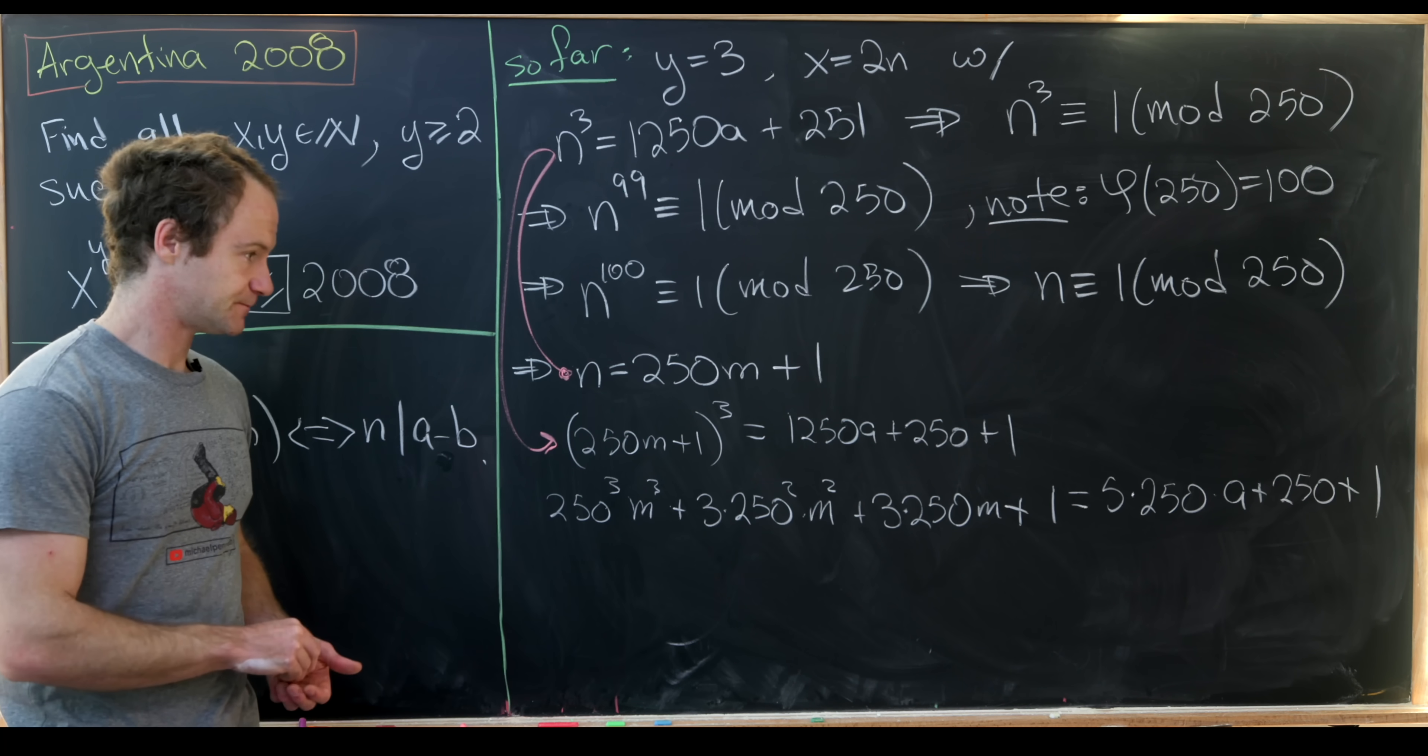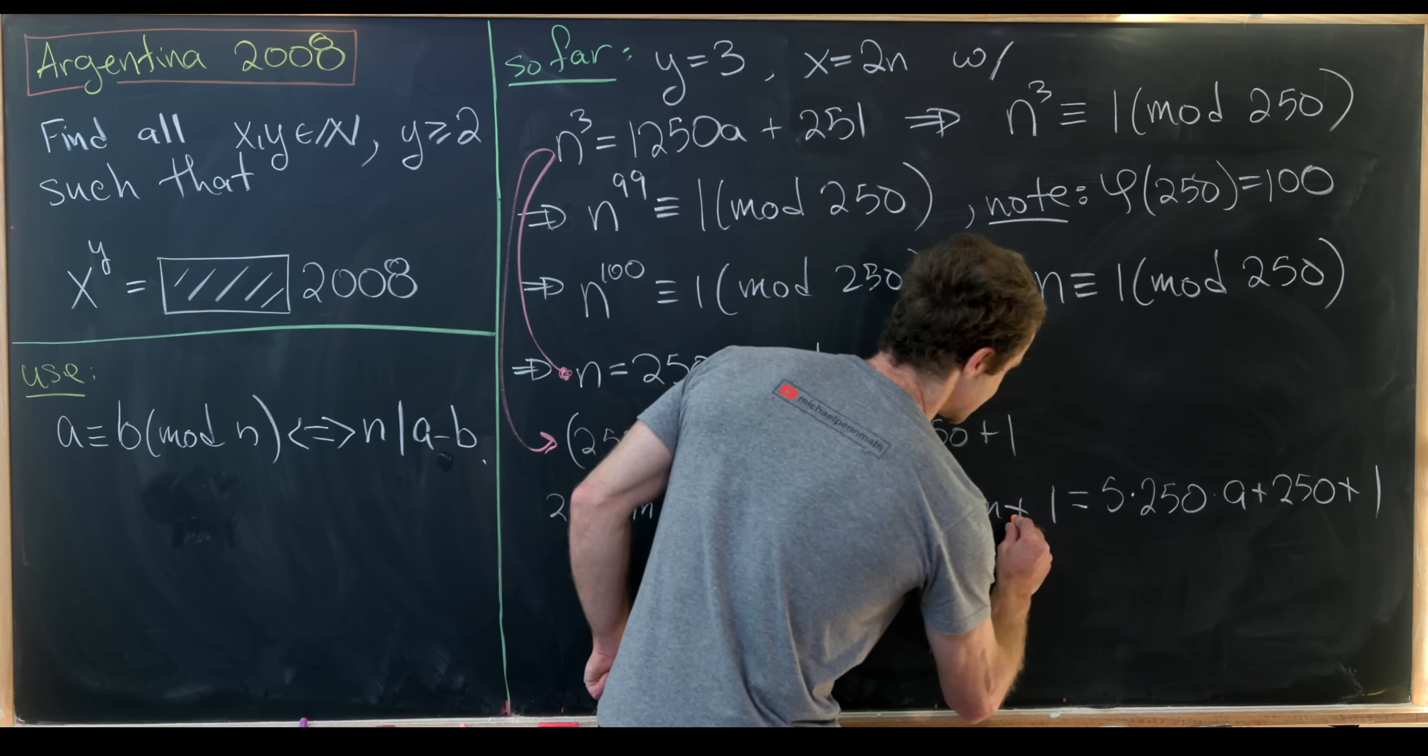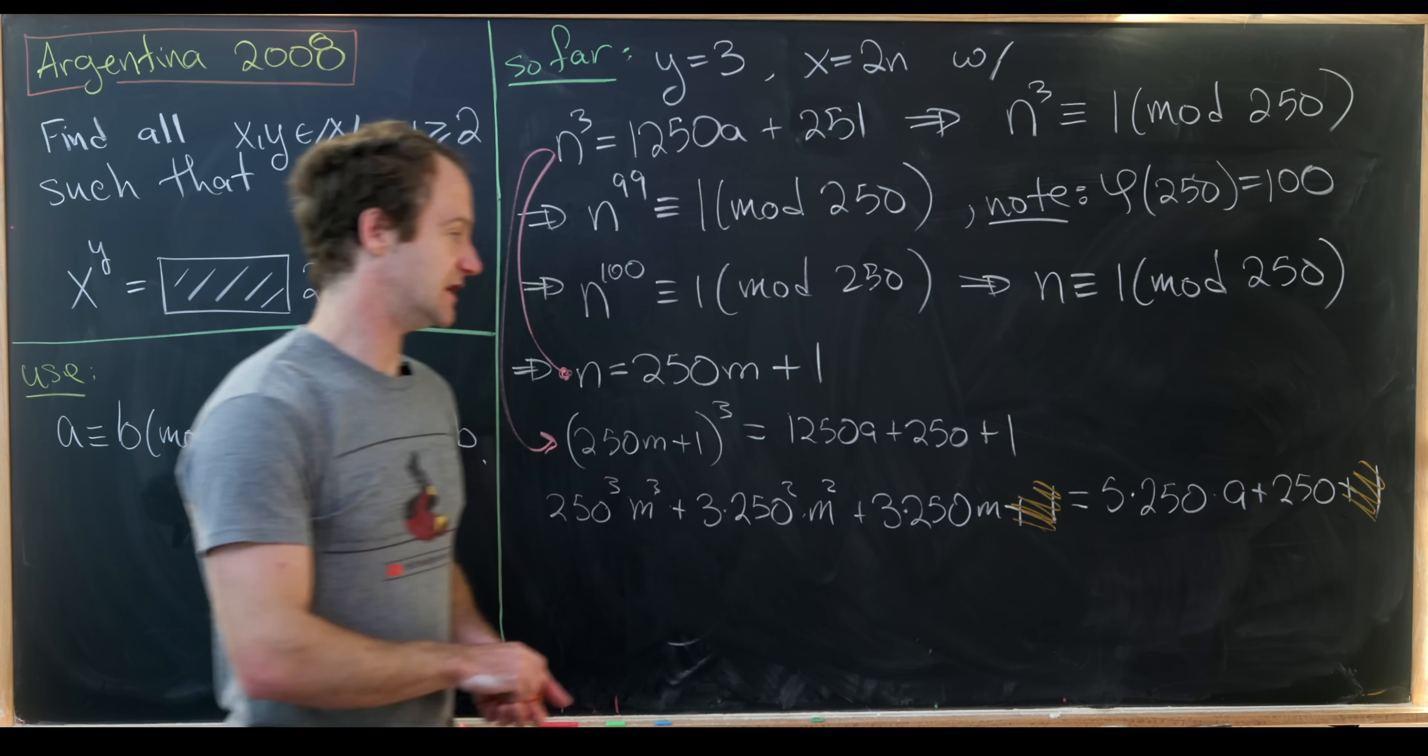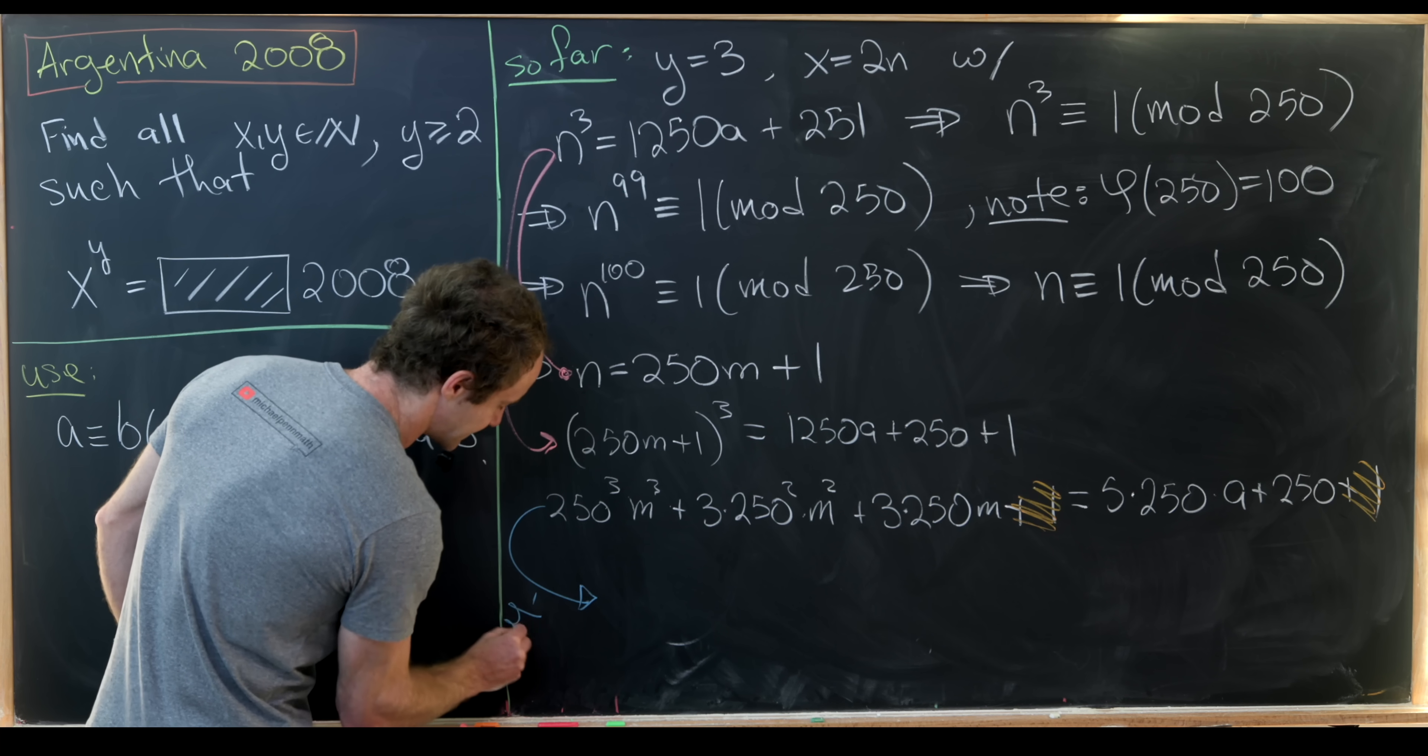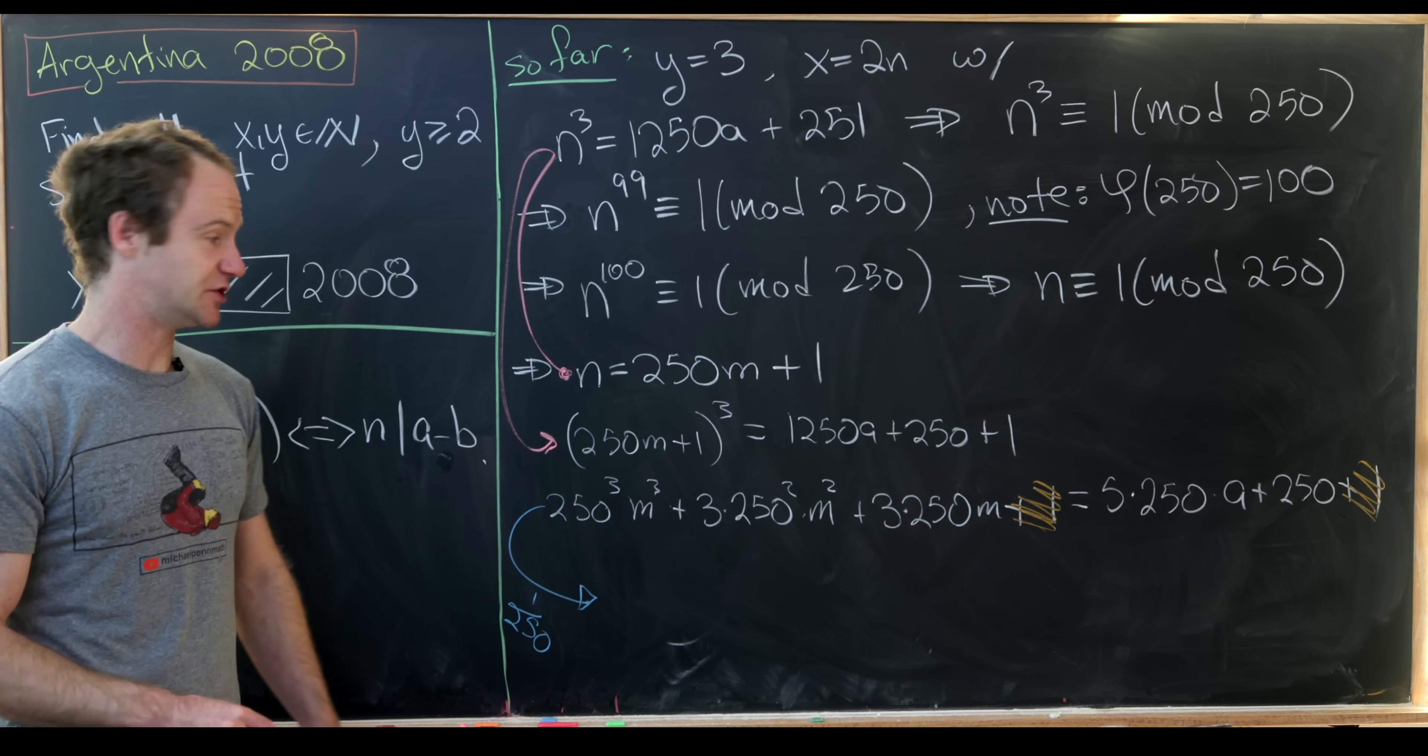And now what we'll do is take these ones on either side of the equation and have them cancel each other and then notice everything that's left over is a multiple of 250. So we can divide this entire equation by 250.